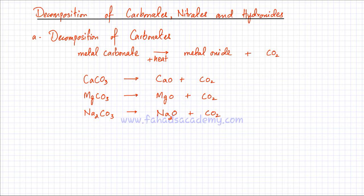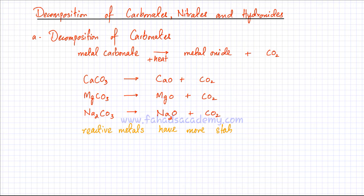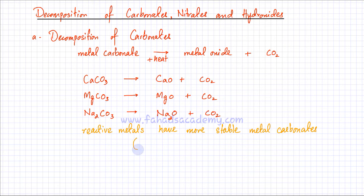So, to summarize: whenever a metal carbonate is heated, it decomposes, produces the metal oxide, and gives off carbon dioxide. One important point is that reactive metals have more stable metal carbonates, which means their decomposition is much more difficult and they require a higher temperature to decompose.